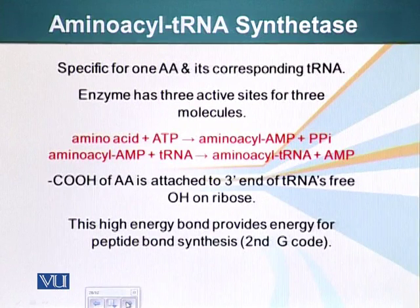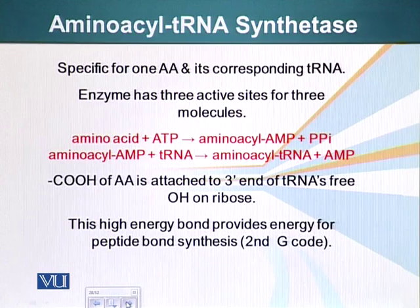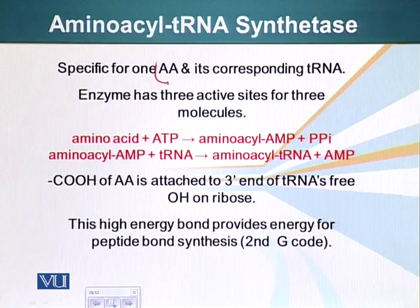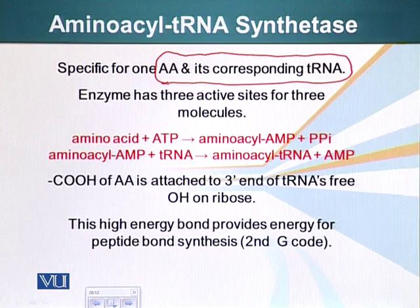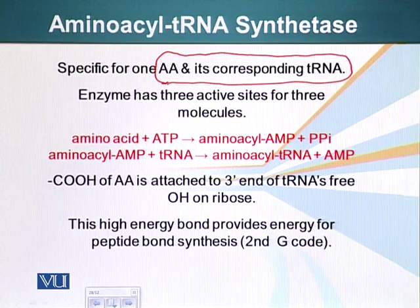First of all, let me introduce you to a very important enzyme or group of enzymes called aminoacyl tRNA synthetase. This is a group of enzymes. Each one in this group is specific for a particular amino acid and its corresponding tRNA. So one of these enzymes will recognize a specific amino acid and its corresponding tRNA. There are as many aminoacyl tRNA synthetases as there are tRNAs.